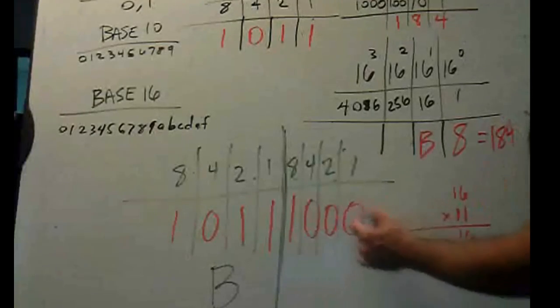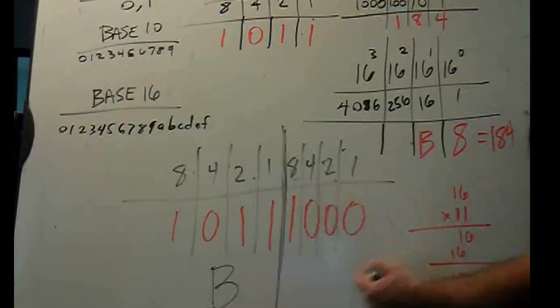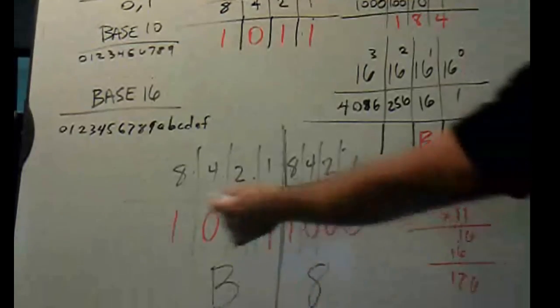And, if we take these 4 bits, an 8, 4, 2, 1, we've got an 8, we've got no 4, no 2, no 1, so this is an 8, then we just write that as an 8. And, now we've got our B8, so we could take, in binary 8 bits, divide them into chunks of 4 bits, and we can easily convert 4 bits to our hexadecimal character.